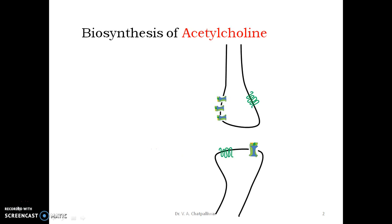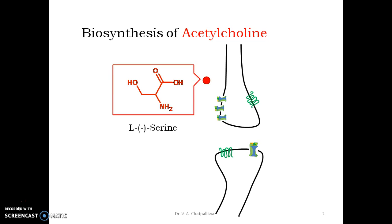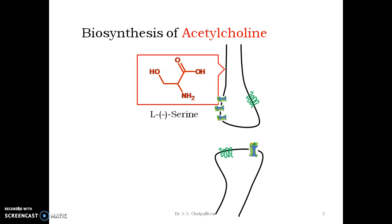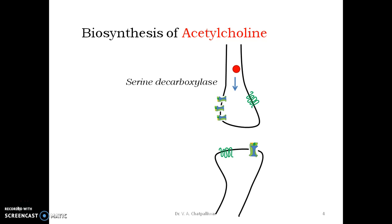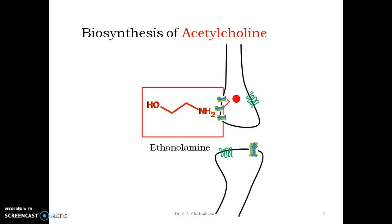The precursor of acetylcholine is an L-amino acid — serine, the simplest amino acid. Serine is present in the extra-neuronal part, from where it is picked up into the presynaptic nerve ending.